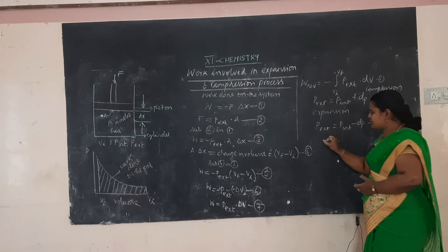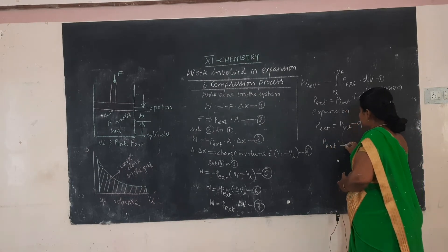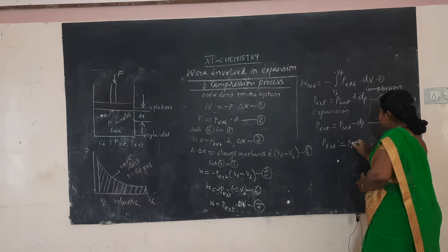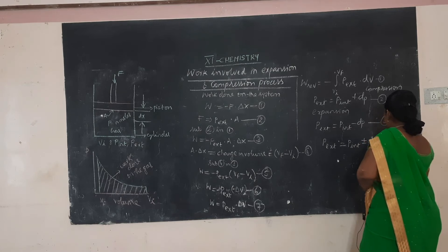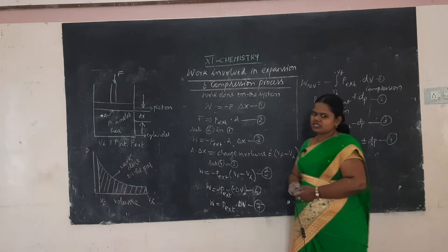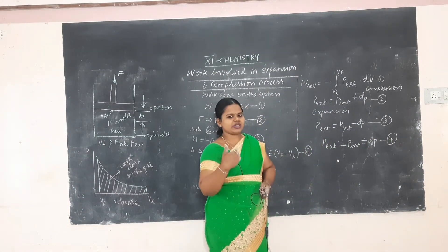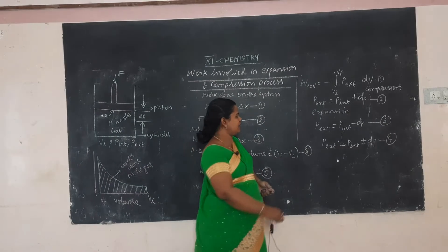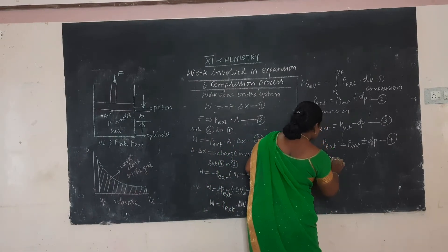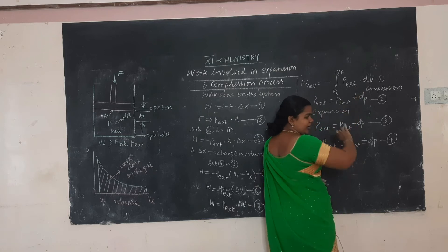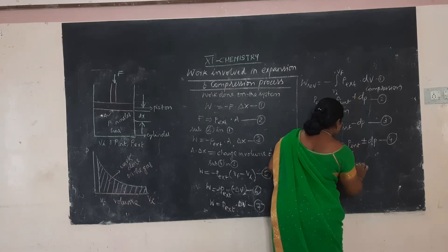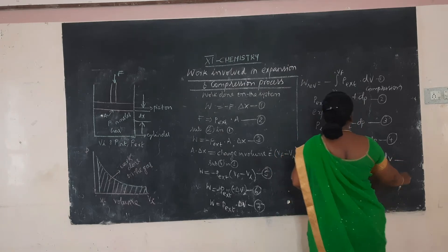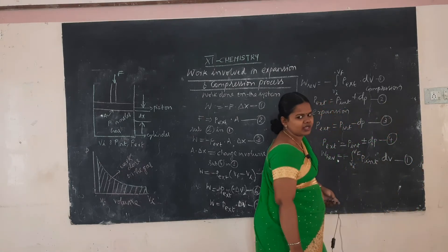In general, you can write P_ext = P_int ± dP. During compression, W_reversible = -∫(V_i to V_f) P_int dV — that is the first equation.